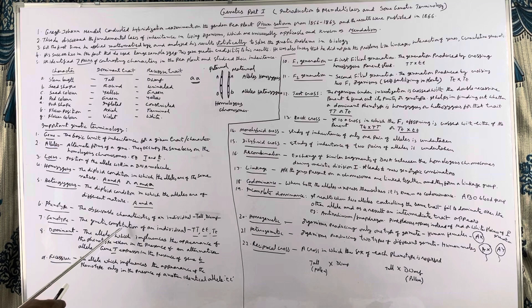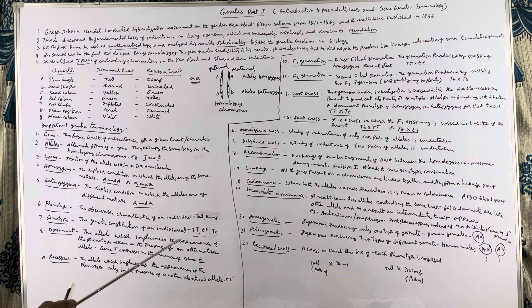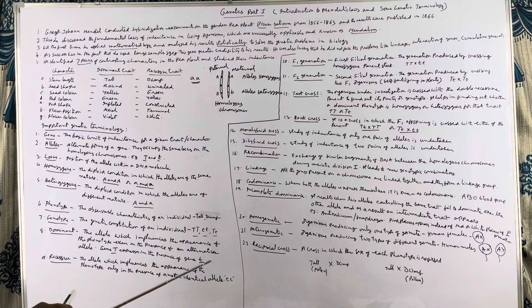Genotype is the genetic constitution of an individual. For example, capital T capital T represents homozygous dominant — tallness. Small t small t is homozygous recessive — dwarfness. Capital T small t is heterozygous. So by the composition of the genes, we can say whether a plant is homozygous or heterozygous.